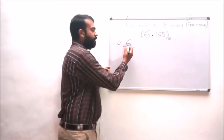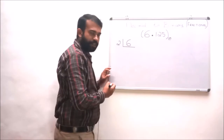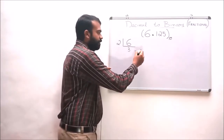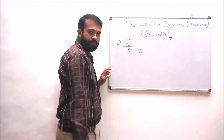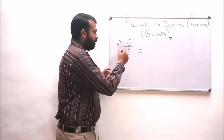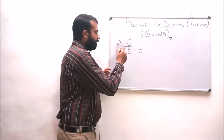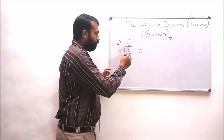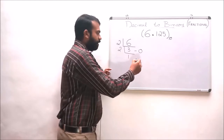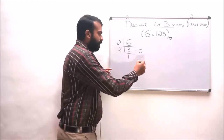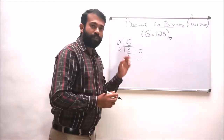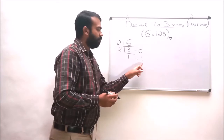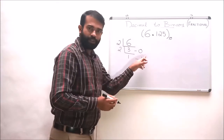Dividing 6 by 2, we get 3 with a remainder 0. When we divide 3 by 2, we get 1 with a remainder 1. So the binary equivalent of 6 is 110.